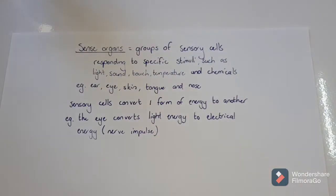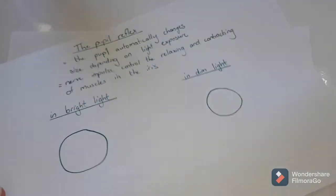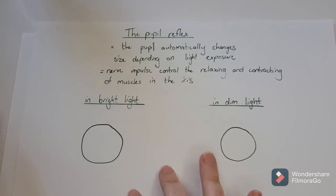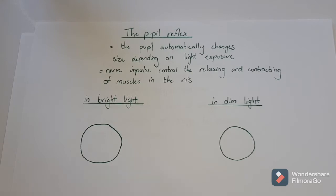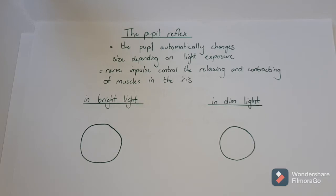Now looking at how the eye works, starting with the pupil reflex. Changing the size of the pupil is one of those reflex arcs — you do not control it, it automatically happens. The pupil changes shape, either getting bigger or smaller, depending on light exposure. In a very bright area the pupil gets smaller to protect the cells of the retina from damage, and in a very dark area the pupil gets bigger to let in more light so we can see.